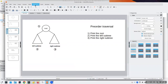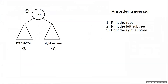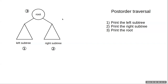Now there's another way called post-order traversal. In this case we print the left first, then the right, and then the root — so the root gets processed last. There's no rule that says we have to start with the root. Your choice of how you traverse the tree is dependent on what you want to do with it.